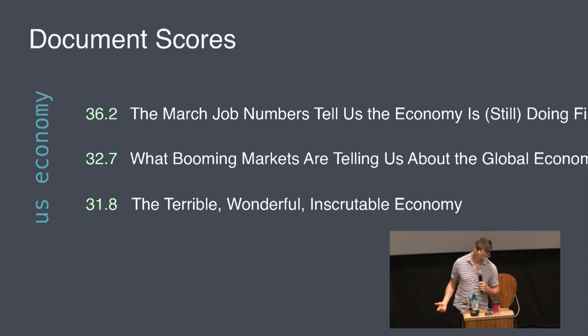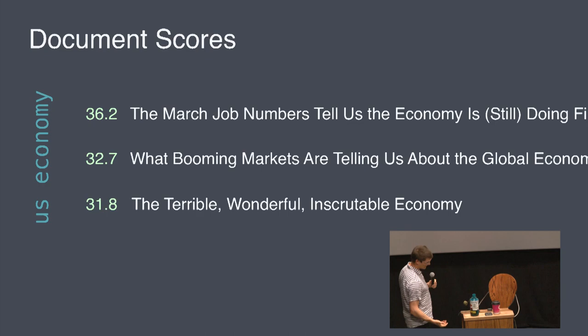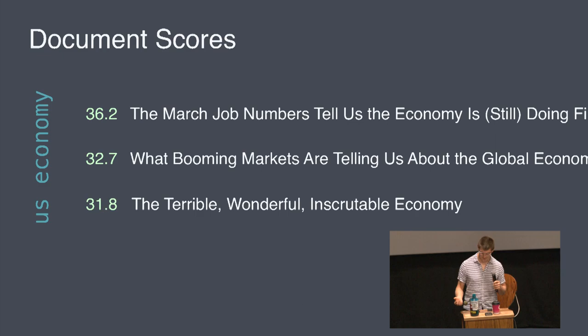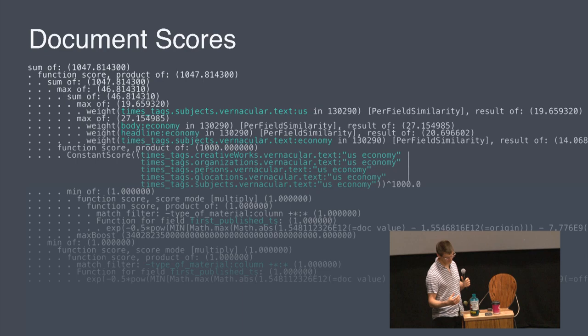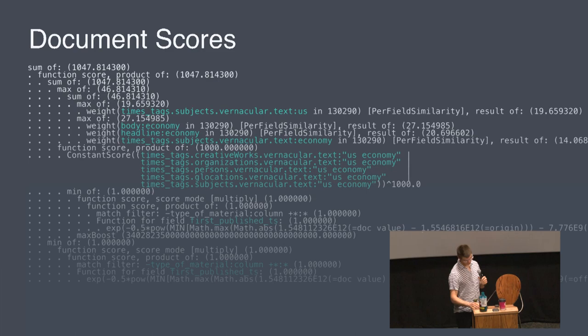We needed to go deeper and understand document scores. For a query like 'U.S. economy,' you can see articles have scores — that's helpful, but you don't know why they have those particular scores. Fortunately, Elasticsearch lets you go deeper and see the impact of a particular field for a query, as well as the impact of that Gaussian decay. This gave us the ability to start understanding what was actually happening in our search system.